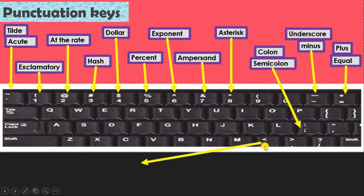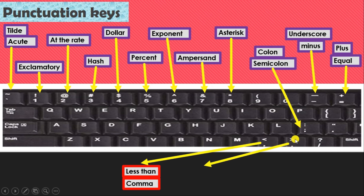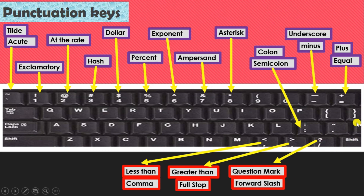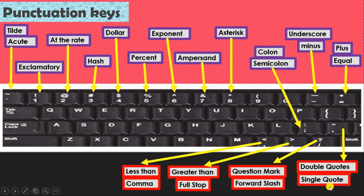The comma key also has the less-than symbol above it. Similarly, the full stop key has the greater-than symbol above it. The forward slash key has the question mark above it, and the slash is also used for division. The next key has double quotes above and single quotes below — the single quote is also known as the apostrophe.